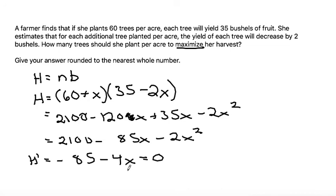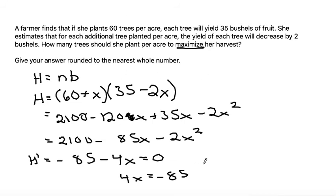Now solving for x, we'll move the 4x to the other side, so 4x equals negative 85. Then divide both sides by 4 and we get x equals negative 21.25.